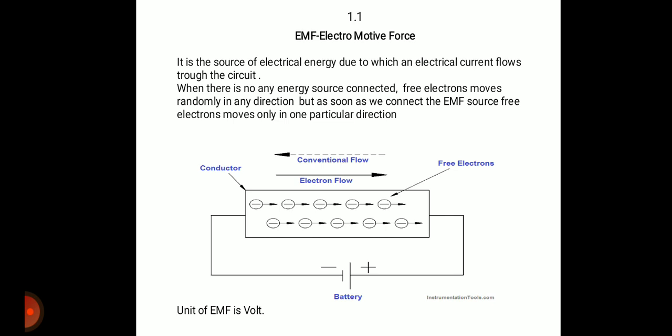Due to the attraction force between positive and negative charges, electrons start moving towards the positive terminal of the battery, resulting in a flow of electric current. Electrons always flow from the negative terminal to the positive terminal of the battery, but we consider the current direction from the positive terminal to the negative terminal. The unit of electromotive force is the volt. An example of EMF is a battery or the voltage received from the MSEB.